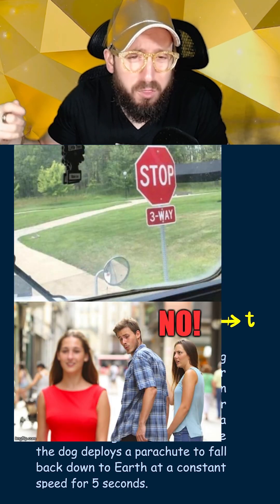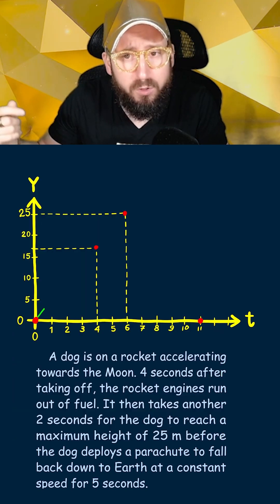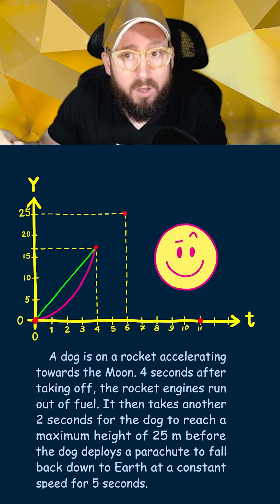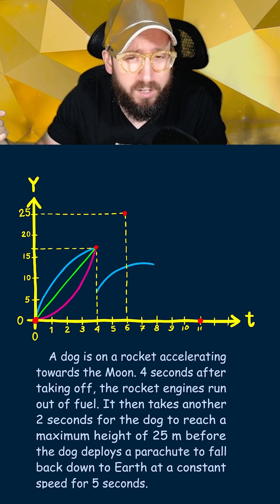Now all we have to do is connect the time points. There are three ways you can connect these time points. You can either draw a straight line between them, you can draw a concave up curve which looks like a happy face, or you can draw a concave down curve which looks like a sad face.